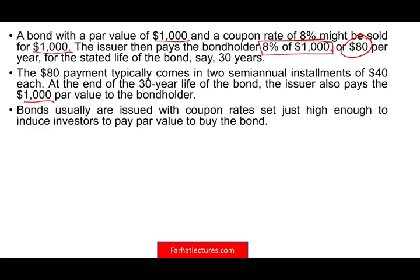The issuer will pay the $1,000 par value at the end of the life of the bond, which is the face value. Bonds are usually issued with a coupon rate high enough to induce investors to pay the value for the bond. When they issue the bond, they want to make sure the bond is offered at an interest rate high enough to entice investors — otherwise you will not buy it.